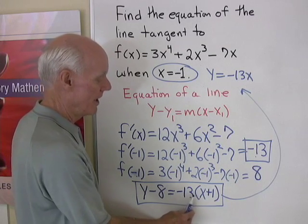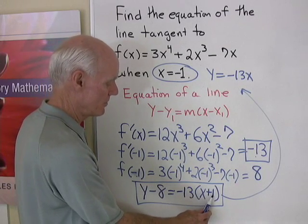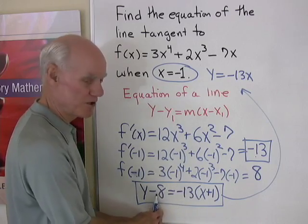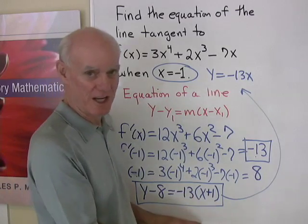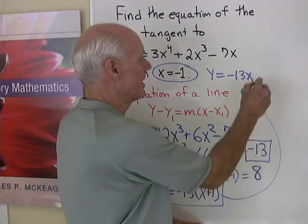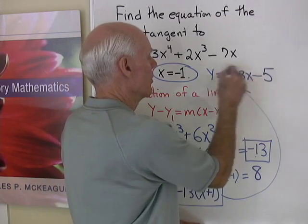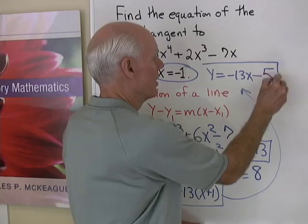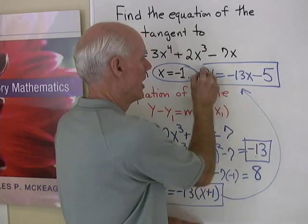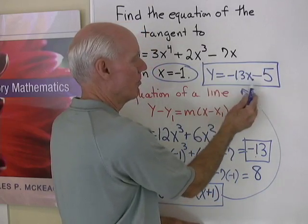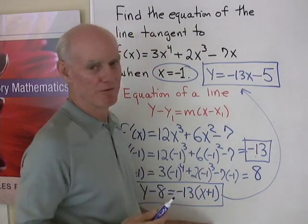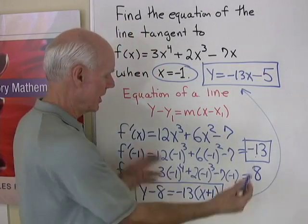And then I added 8 to both sides. So negative 13 plus 8 is going to be negative 5. There's the equation of my line in slope-intercept form, and I used the point-slope form to get it.